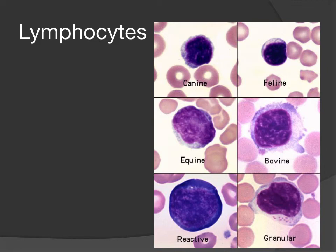Lymphocytes are the smallest of all white blood cells. In canine and feline, the nucleus tends to be about the same size as a red blood cell. In bovine especially, we get reactive-looking atypical lymphocytes that are quite a bit larger. Equine lymphocytes are a little bit larger too. We can also see reactive lymphocytes with very dark cytoplasm, and occasionally a few lymphocytes with granules, though typically lymphocytes fall under the agranulocyte category.